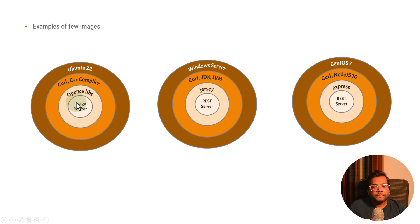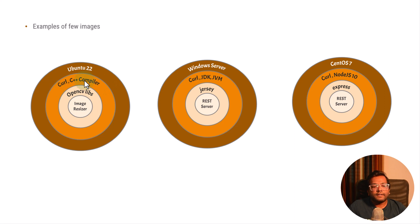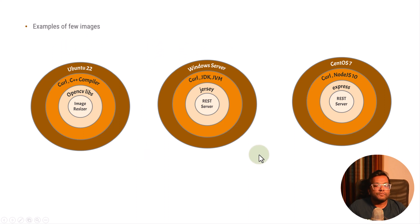A third image can be a REST server written in Node.js, which requires the Express library. It is developed on Linux CentOS. So we have different applications developed on different libraries, different programming languages, and different operating systems, but they will run on any operating system without any issues because Docker provides that feature.